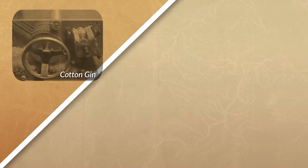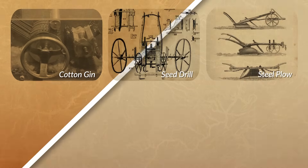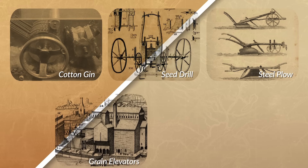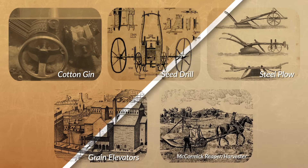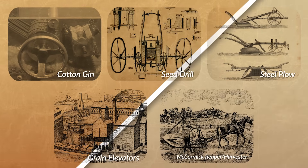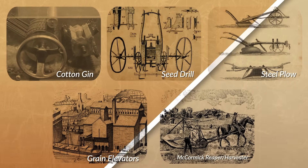Inventions such as the cotton gin, the seed drill, the steel plow, grain elevators, and the McCormick reaper harvester all increased agricultural output.